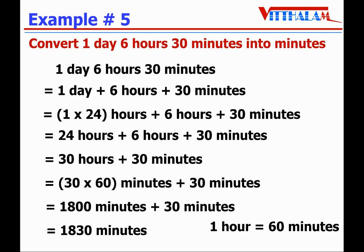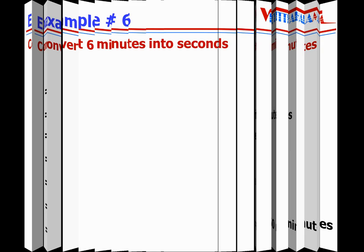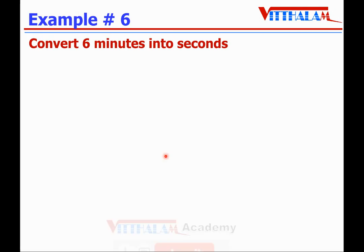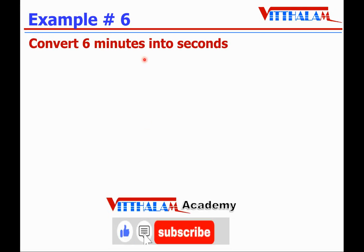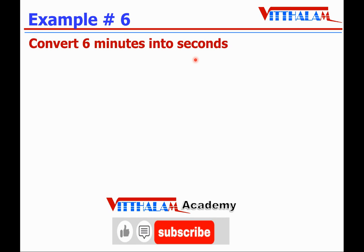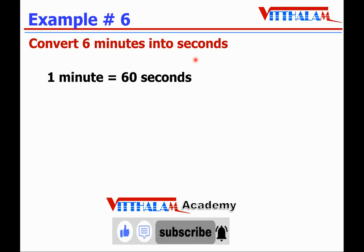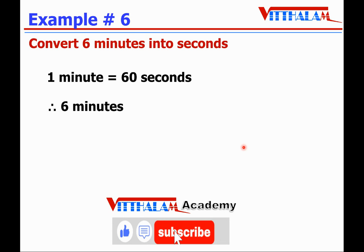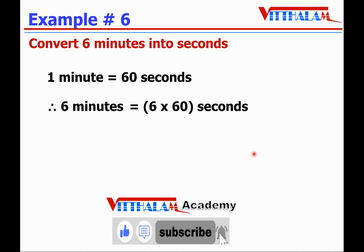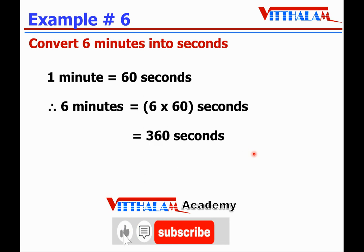Let's take another example: convert 6 minutes into seconds. We know 1 minute equals 60 seconds, therefore 6 minutes equals 6 multiplied by 60 seconds, which equals 360 seconds.